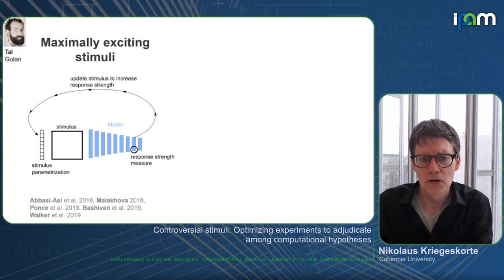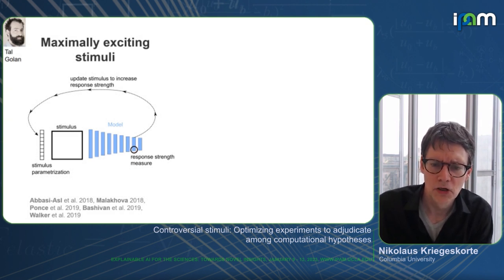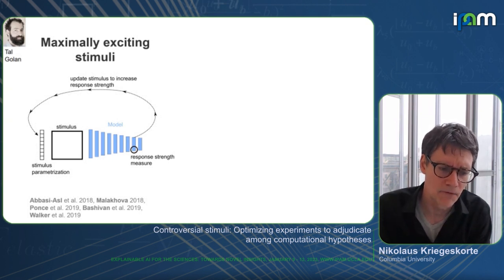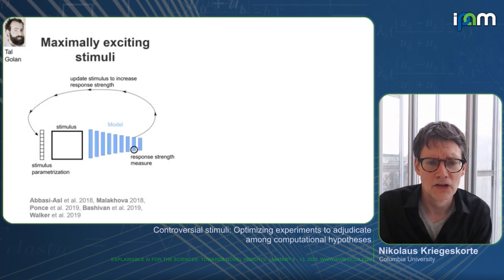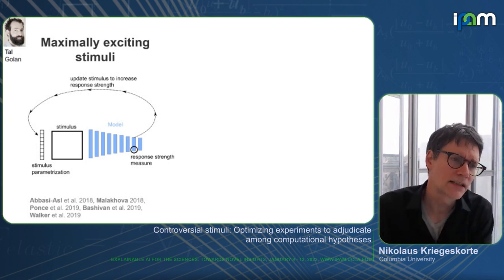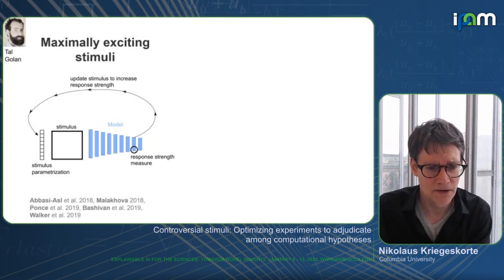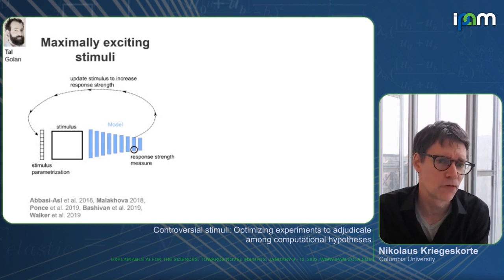This is in contrast to another exciting stimulus synthesis approach used by other labs: maximally exciting stimuli. In that approach, you look at a particular unit in a neural network and use optimization techniques to create stimuli that very strongly drive that unit, deriving super-stimuli that drive the unit more strongly than natural stimuli do. This creates a strong, bold prediction — the model predicts these synthesized stimuli will also drive strong responses in the biological brain — providing a potentially severe test of one particular model.